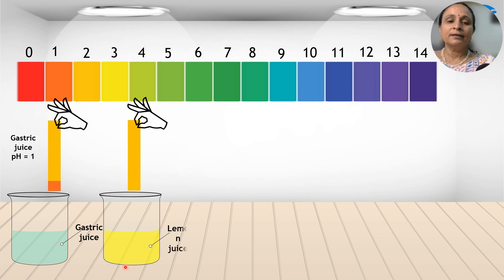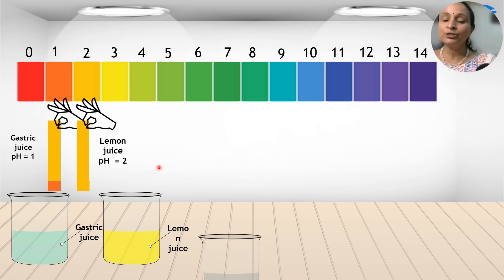Now take lemon juice. Lemon juice is available everywhere. You can just make it any time. Dip the universal paper in the juice. Take it out. Compare with the scale which you have got. It is matching with the color number 2. So the juice of lemon has got a pH of 2.